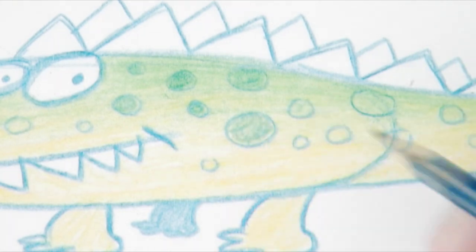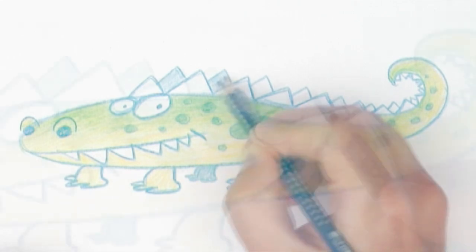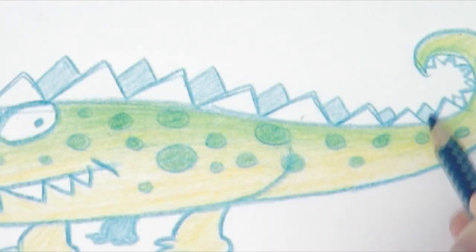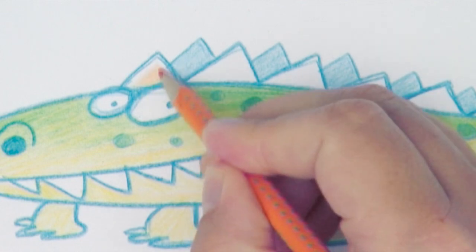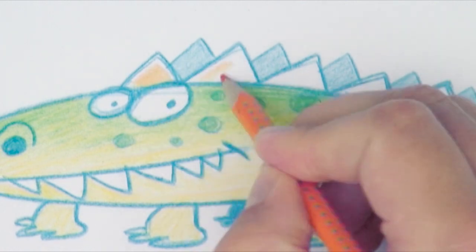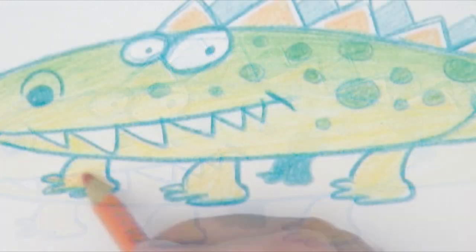Then I color all the dots dark blue. First I color the plates on the back. Then I color the feet. Now Kiss Me is starting to get really colorful.